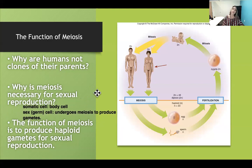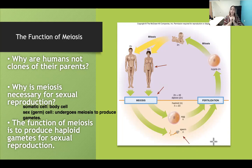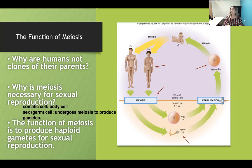Somatic cells are your regular body cells; germ cells or sex cells undergo meiosis to produce gametes. Here we have mom and dad — meiosis occurs, egg and sperm are produced. Egg and sperm come together through fertilization to produce a zygote, which adds many cells and becomes a baby. As the baby grows into an adolescent, then an adult, meiosis occurs again to produce gametes.